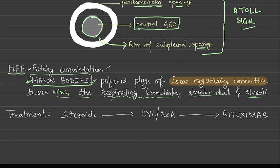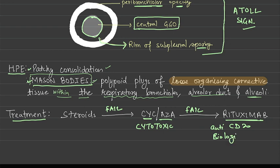Treatment: start with steroids. If they fail, you can give cyclophosphamide or azathioprine - these are cytotoxic drugs. If they fail, you give rituximab, which is anti-CD20 biological.